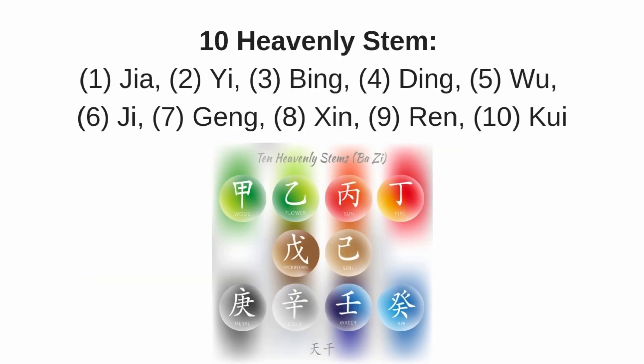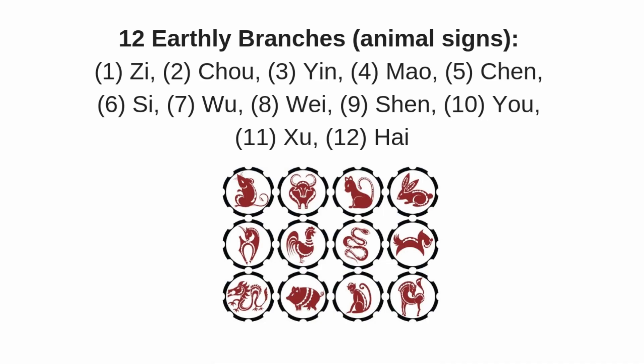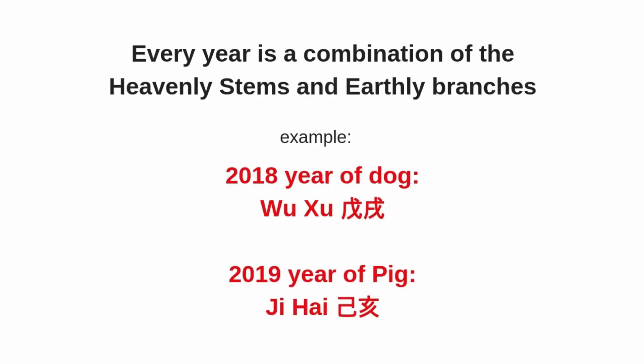There are 10 heavenly stems and 12 earthly branches in the Chinese calendar system. The 10 heavenly stems are: Jia, Yi, Bing, Ding, Wu, Ji, Geng, Xin, Ren, and Gui. The 12 earthly branches are: Zi, Chou, Yin, Mao, Chen, Si, Wu, Wei, Shen, You, Shu, and Hai. They correspond to the 12 Chinese animal signs, and every year is a combination of a heavenly stem and earthly branch.